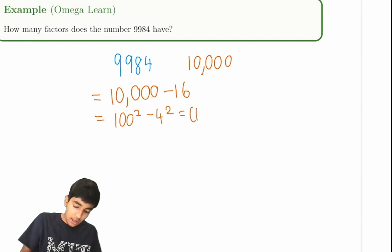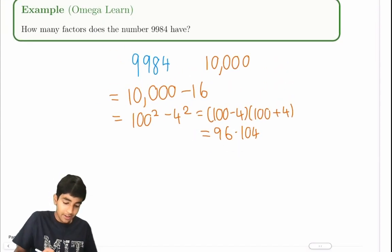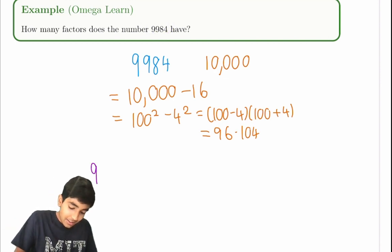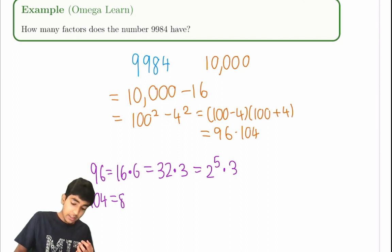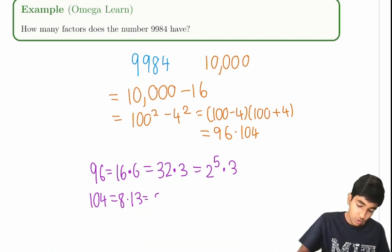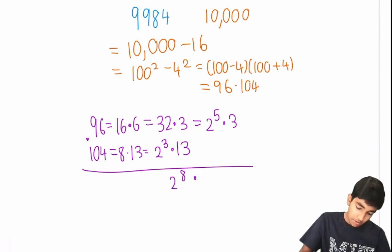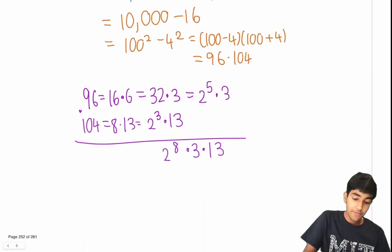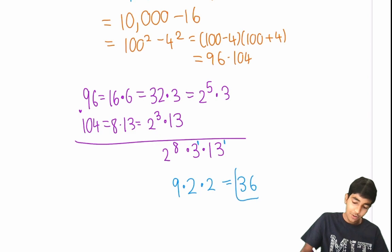Finding the prime factorization of 96 and 104 isn't too hard. 96 is 32 times 3, and 32 is 2 to the power of 5, so 96 = 2⁵ × 3. And 104 is 8 times 13, and 8 is 2 cubed, so 104 = 2³ × 13. Their product is 2⁸ × 3 × 13. So how many factors does this have? Using the factor trick: add one to all the exponents and multiply. That's 9 × 2 × 2 = 36, which is our final answer.